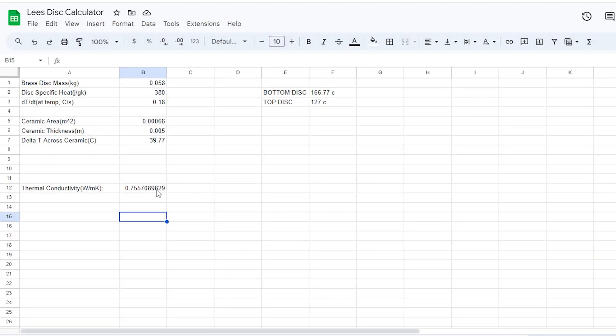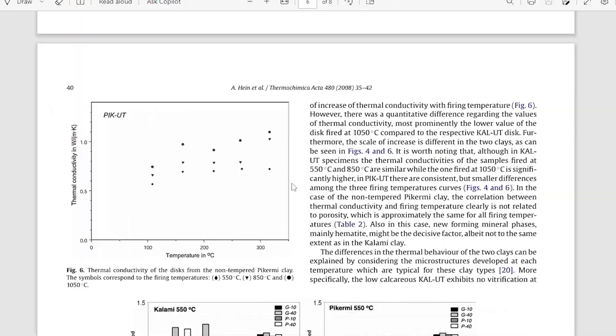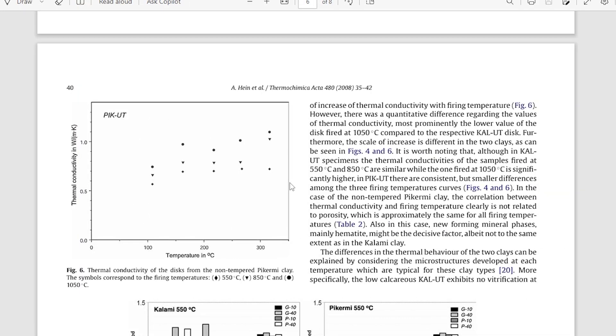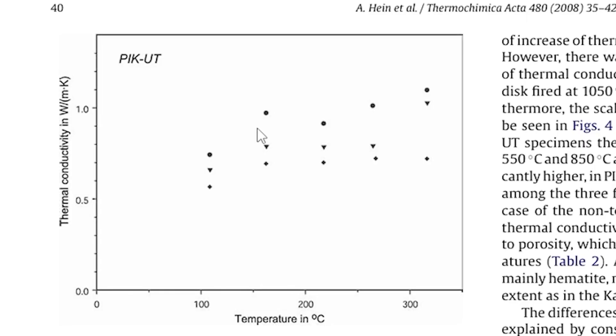As a sanity check to make sure that my number is approximately in the right range of what it should be, I took a look at this paper. This paper is written by a couple of archaeologists that were trying to discover the coefficient of thermal conductivity for some other earthenware ceramics found in ancient Greece.